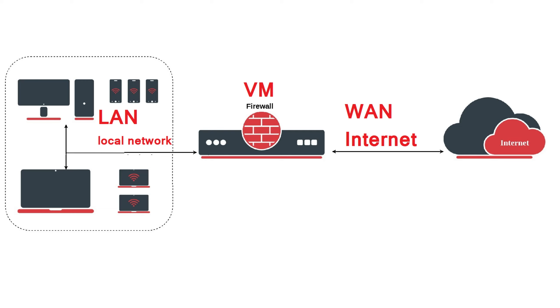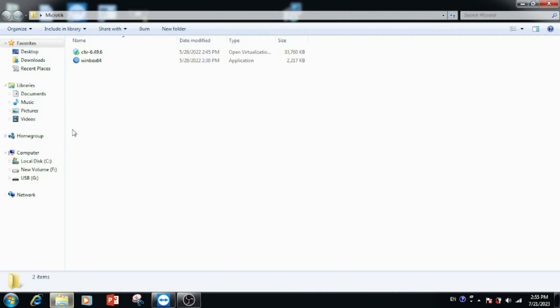First, we need to download the OVA file from the MikroTik site. In the video description, I have attached the MikroTik OVA file download location. Here I have already extracted the OVA file and Winbox. Winbox is used to access MikroTik for configuration — it's a client application for accessing the MikroTik router.